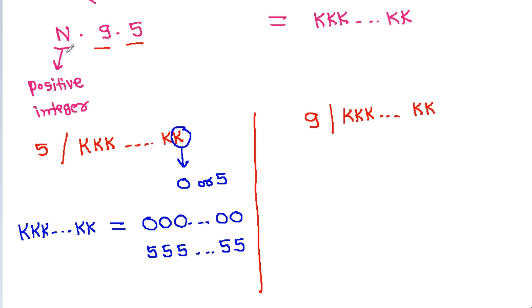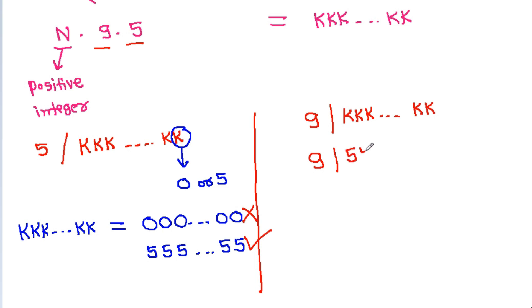Since n is a positive integer, the number k cannot be 0, so k must be 5. Therefore, 9 must divide the number 5, 5, 5, 5 (all 5s).